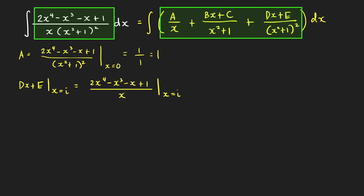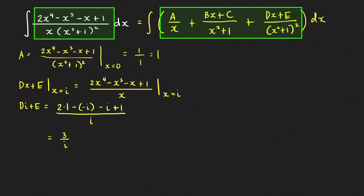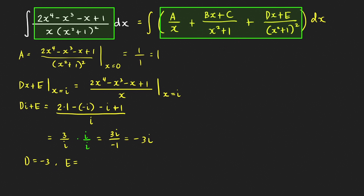This equals the rational function with x squared plus 1 quantity squared covered up: x cubed minus x plus 1 all over x, evaluated at x equals i. The left-hand side gives Di plus E. The right-hand side simplifies to 3 over i, which equals negative 3i. Since these complex numbers are equal, their real and imaginary parts must match: D equals negative 3, and E equals 0.